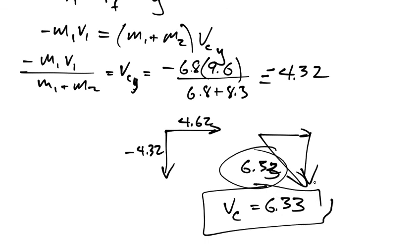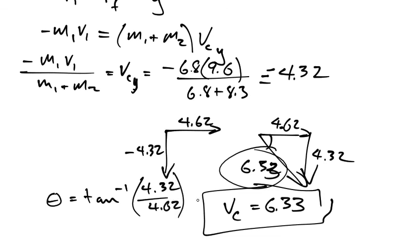And the direction, this direction would be 4.62 and a 4.32. And so therefore, theta is going to be the inverse tangent of 4.32 divided by 4.62. So let's try that. 4.32, enter. 4.62 divided by. And now let's go inverse tangent. And the angle is 43 degrees. 43.1 degrees like this.